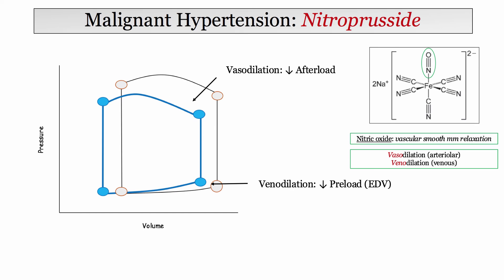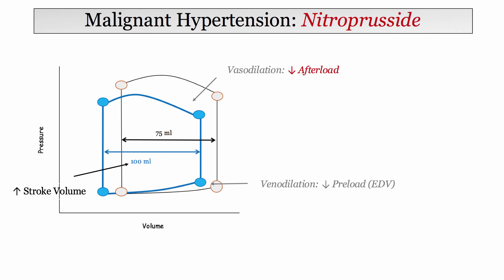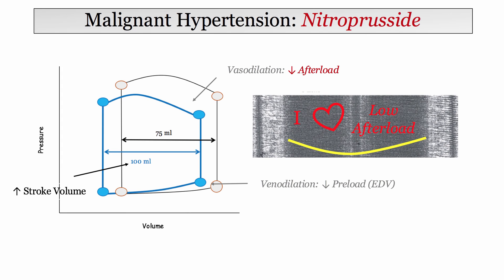Shifting focus to nitroprusside and its impact on the pressure-volume loop — given its combined effect on venodilatation and vasodilation, we see a shift to lower end diastolic volume with blood pooling in the large venous capacitance system, and a reduction in afterload as a result of arteriolar dilation. The effect of that decreased afterload is an increased stroke volume — a sarcomere with low afterload is a happy sarcomere.